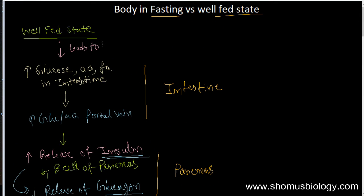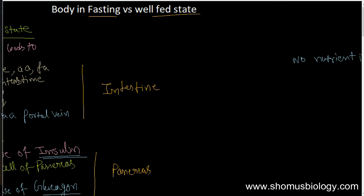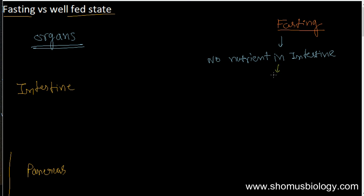Now let's talk about what happens during the fasting state. Fasting leads to no nutrients in the intestine — the intestine is free from any nutrients. Looking at this organ, there are no nutrients present, and that leads to a low amount of glucose, amino acids, and fatty acids in the blood.